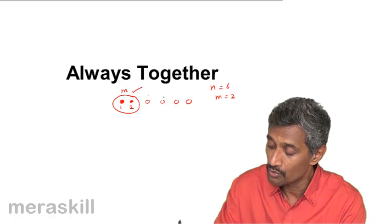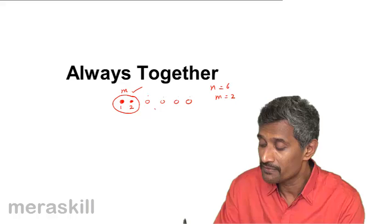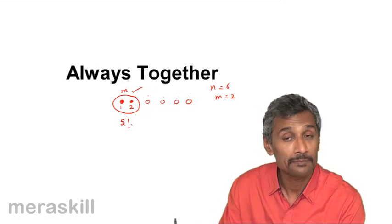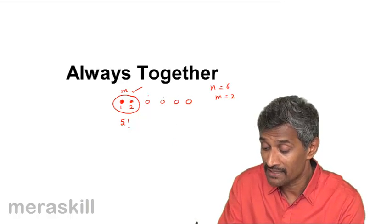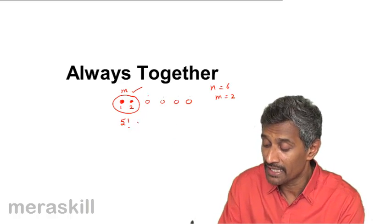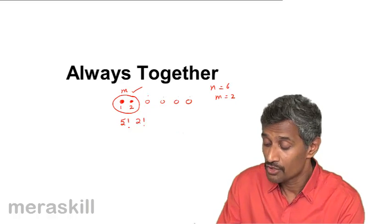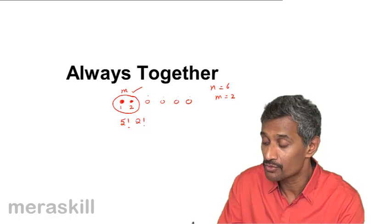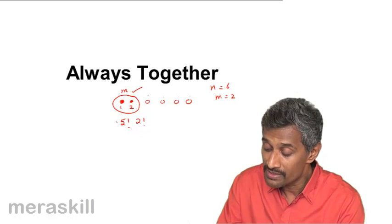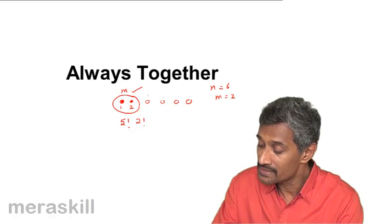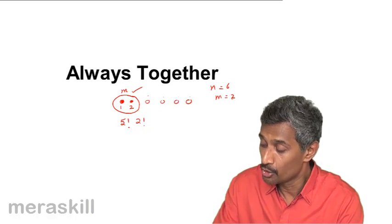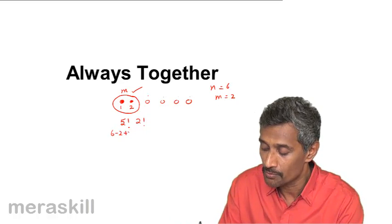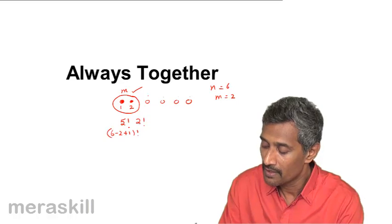The five items can arrange themselves in five factorial ways, and then the two red balls can also arrange themselves in two factorial ways. So the total number of possible arrangements is five factorial into two factorial. Now how does this five arise? It is six minus two plus one, so five is nothing but six minus two plus one.